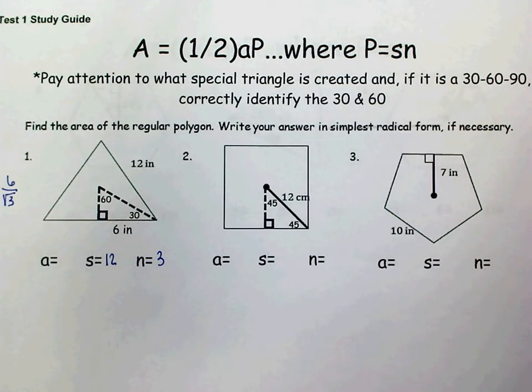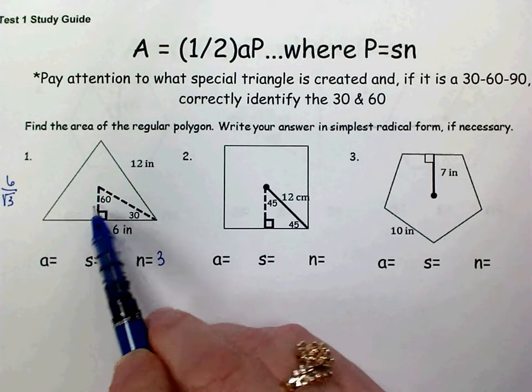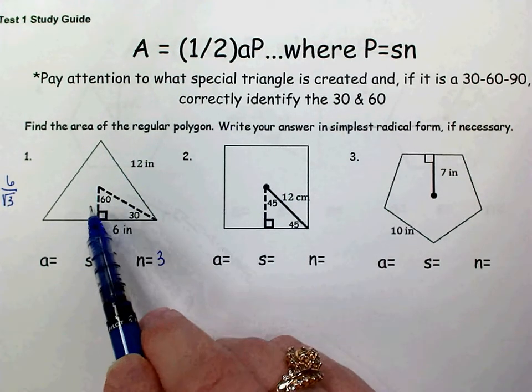So you're going to take 6 and divide by the square root of 3. It's not dividing by 2. Remember that 2 to 1 relationship is between the short leg and the hypotenuse.